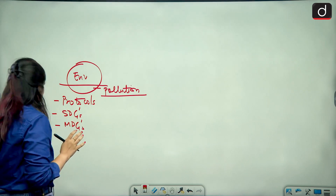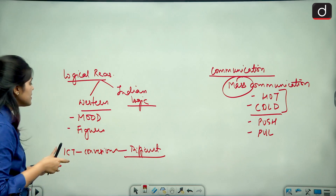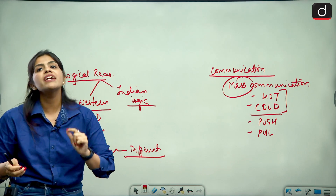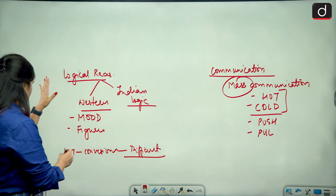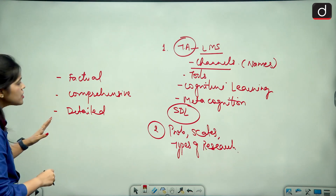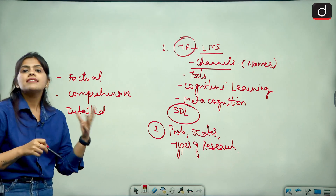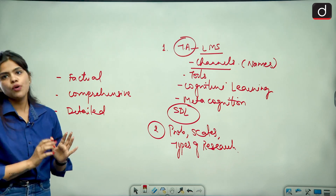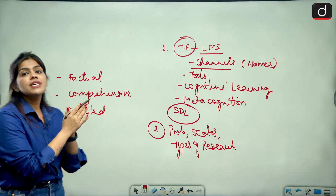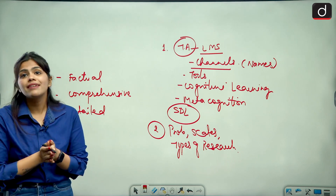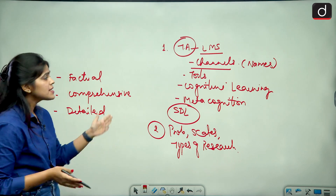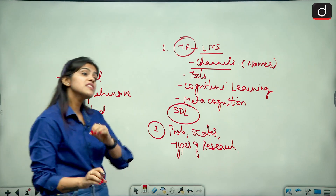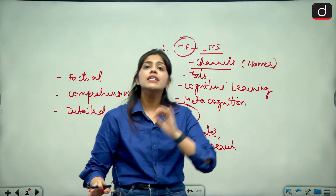To summarize: Communication and ICT were unexpected and difficult, while logical reasoning, data interpretation, maths, and environment topics were easier this time. Teaching aptitude is becoming more and more comprehensive and detailed. These are the changing trends we observe. I would suggest you to study harder — even more so — because the paper is becoming detailed.